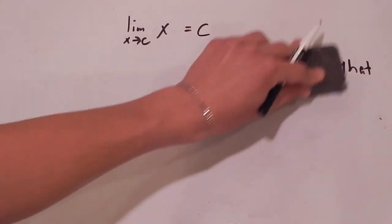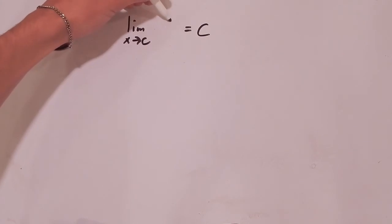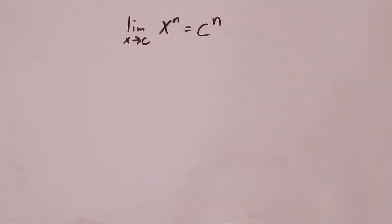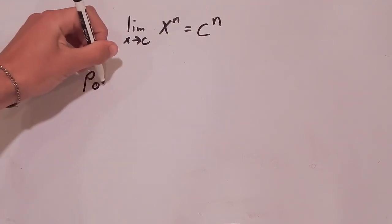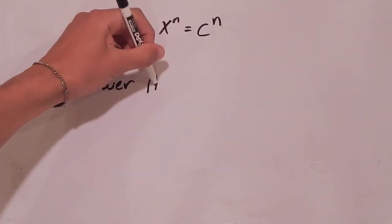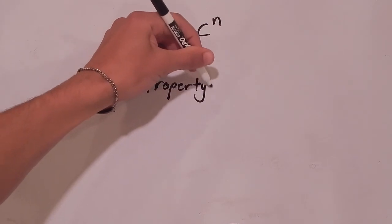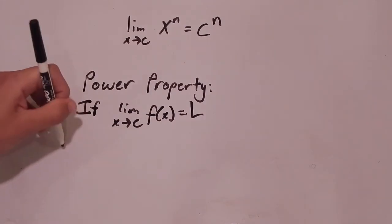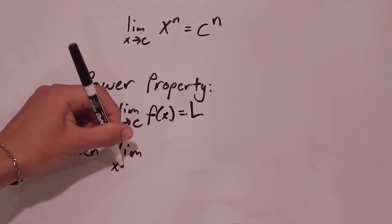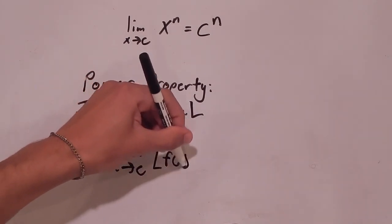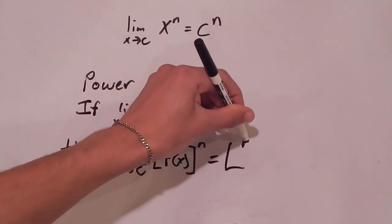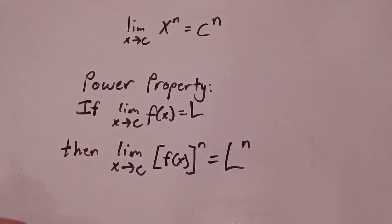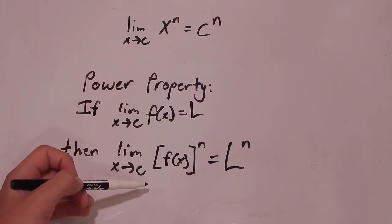So that was our second limit. Now for the final limit, it actually becomes much simpler. Our final limit is that we're trying to prove that the limit as x approaches c of x to the n is equal to c to the n, where n is some positive integer. Now this may sound complicated at first, but we did most of the groundwork in the previous video, and we're going to use a property of limits known as the power property. According to the power property, if the limit as x approaches c of f of x is equal to L, then the limit as x approaches c of f of x to the n is equal to L to the n, where n is some positive integer. Here's the general form of the power property, and we find that this limit is actually just a specific case of it.